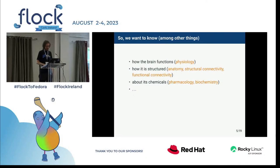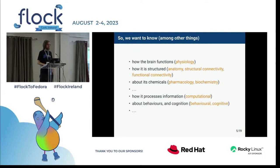This is basically what the research is aiming at. What we want to know among other things is how the brain functions — the physiology, how it is structured, the anatomy and structural connectivity, and also the chemical compounds involved. Also how we process information — that's physical computation — and about behaviors and cognition. These are all different areas of research going on in neuroscience today, and it's a fast-moving field.